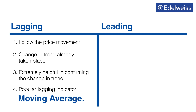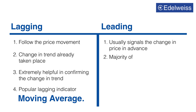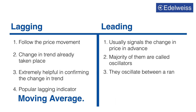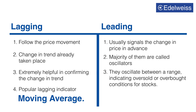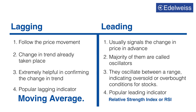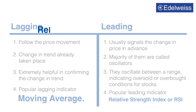A leading indicator usually signals the change in price in advance. Majority of them are called oscillators — they oscillate between a range indicating oversold or overbought conditions for stocks. One such popular leading indicator is Relative Strength Index, or RSI. Let us understand this in detail.